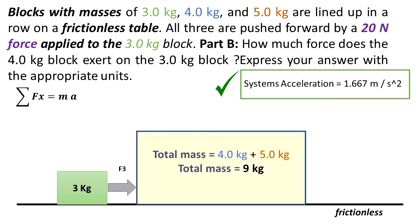The summation of the forces in the x-direction is equal to mass times acceleration. Looking at this system, F3 equals 9kg times the acceleration of the system. We get that F3 equals 15.003 N, which can be rounded to 15 N.